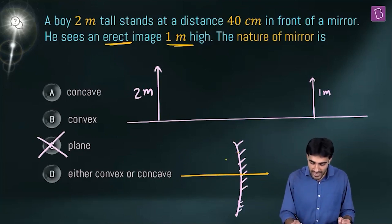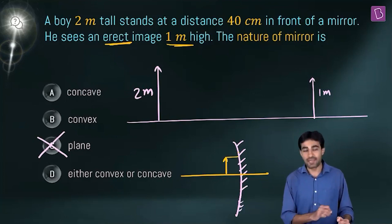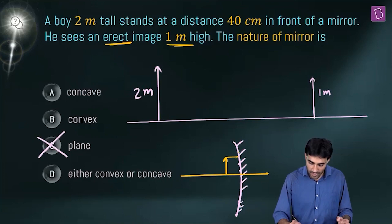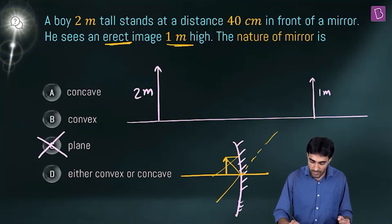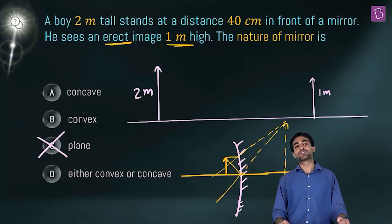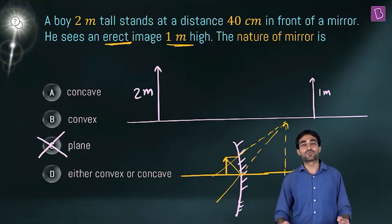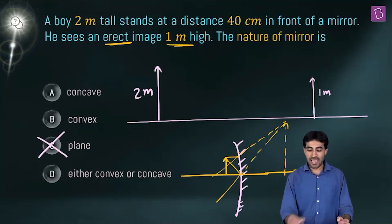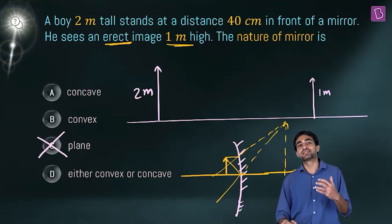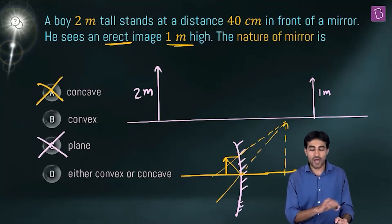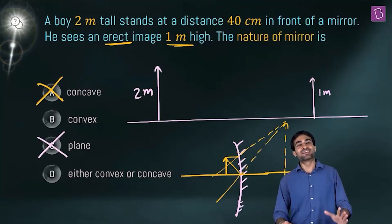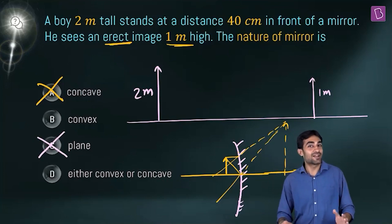When the object is placed between focus and pole of a concave mirror, we get a virtual, erect image — but it is larger than the object. In our case the image is diminished, smaller than the object. So concave mirrors cannot satisfy this condition, and concave mirrors are also rejected.